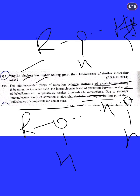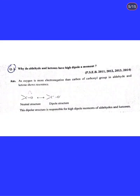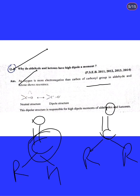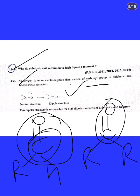Answer to Question 2: In aldehydes and ketones, the carbonyl group contains oxygen which is more electronegative than carbon. The C=O group shows resonance, creating a dipole structure where carbon acquires partial positive charge and oxygen acquires partial negative charge. This dipole structure is responsible for the high dipole moment of aldehydes and ketones.